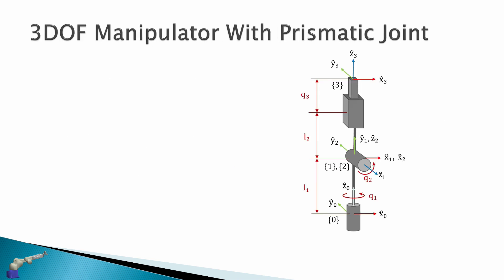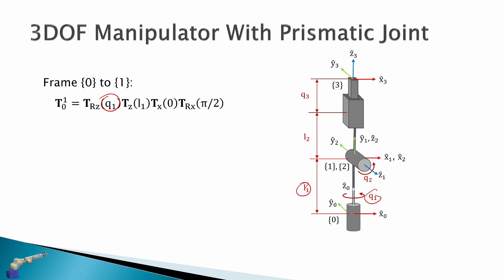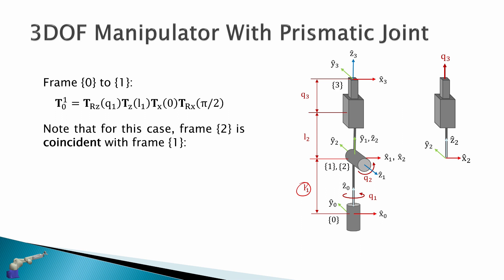Now let's consider a 3-DOF manipulator with a prismatic joint. From frame 0 to 1 it's the same: rotation about the z-axis by q1, translation up z by L1, no translation about x so this is 0, and then a rotation by pi/2 to get the two frames in alignment. Note that for this case, frame 2 is coincident with frame 1. The frame for this joint must be located coincident with the previous one; otherwise the DH parameters won't work.